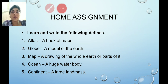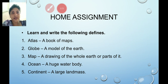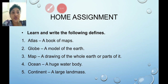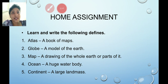Now here is a small home assignment for you. Learn and write the following definitions: Atlas — a book of maps. Globe — a model of the earth. Map — a drawing of the whole earth or parts of it. Ocean — a huge water body. Continent — a large landmass. I hope you understood the whole chapter. Stay home, stay safe and enjoy learning. Thank you.